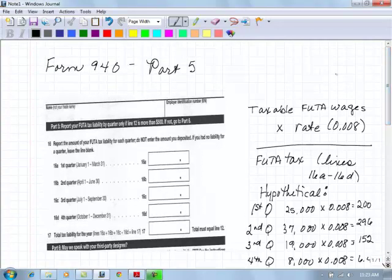Looking here at 940, particularly Part 5, since we had that last week and I have included it again this week to ensure that students understand that Part 5 in our FUTA tax form is a recording of the liability that we have for each quarter.